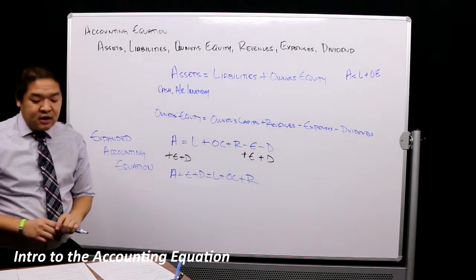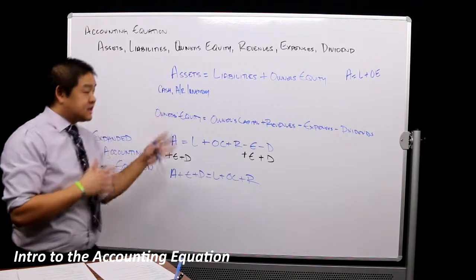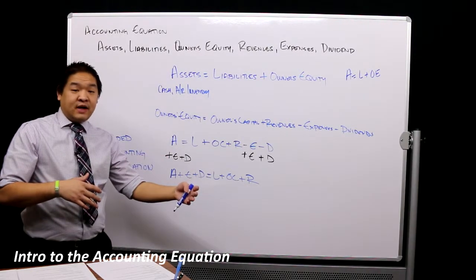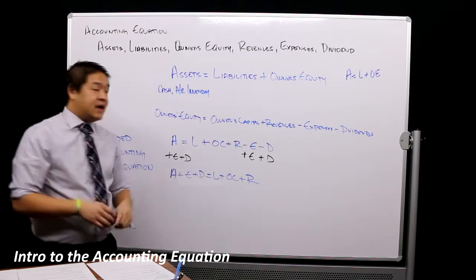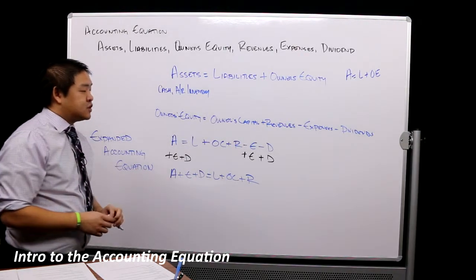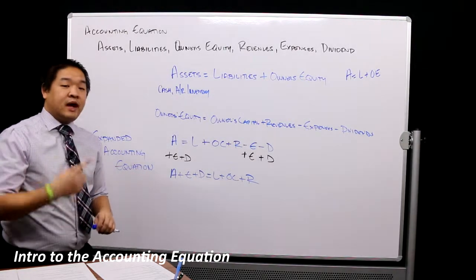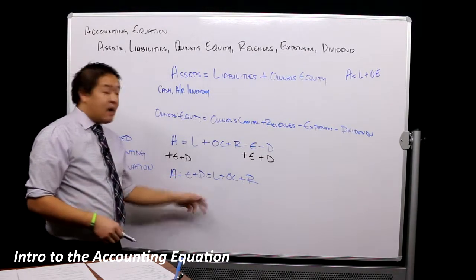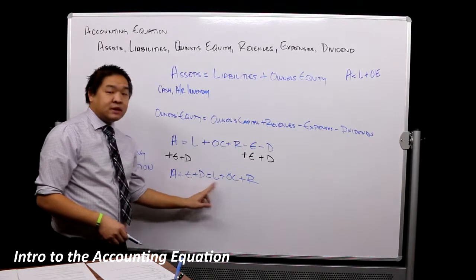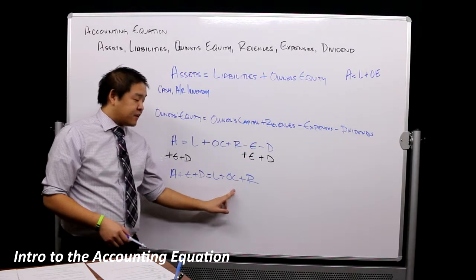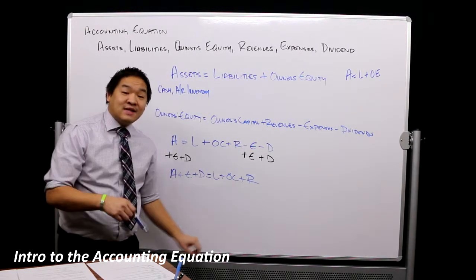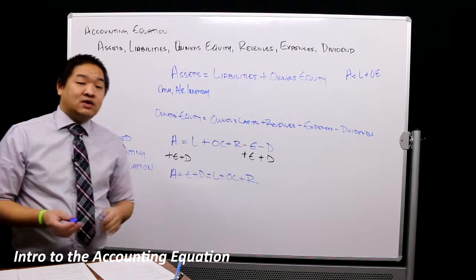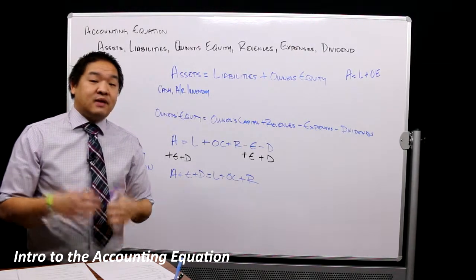That's the accounting equation—very simple, very easy. We use this to figure out how transactions hit the books in our financial statements and our finances when booking transactions we might incur as a business. Assets plus Expenses plus Dividends equals Liabilities plus Owner's Capital plus Revenue. That's what you need to know as we go into our next section, which is all about debits and credits.